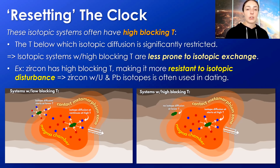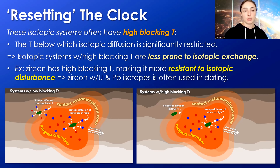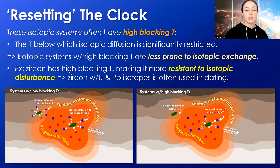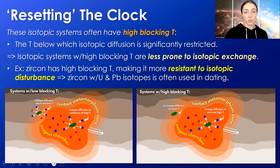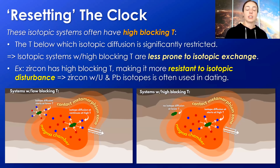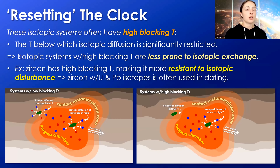An example of this is zircon — a mineral with very high blocking temperature, especially with regards to its uranium-lead contents, making it more resistant to isotopic disturbance. Its uranium and lead ratios stay relatively consistent during periods of alteration and contact and regional metamorphism, whereas other mineral and isotope system combinations might be more prone to diffusion even in metamorphic scenarios. Thus, when we date zircon, we are pretty certain we're dating the last period it fully recrystallized from a full melt rather than just an alteration period.